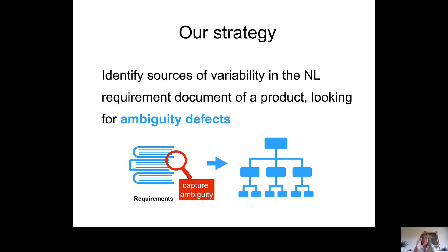In our approach, we consider only one requirement document of a single product and we look for ambiguity defects to see if from these ambiguity defects we can identify sources of variability.